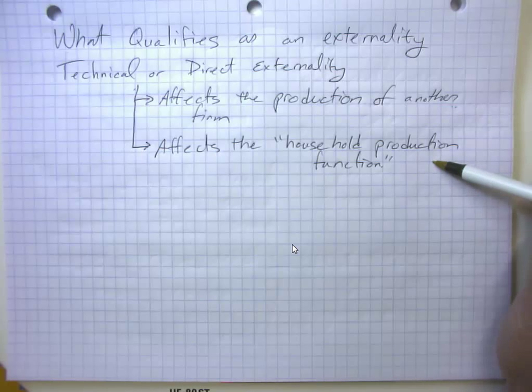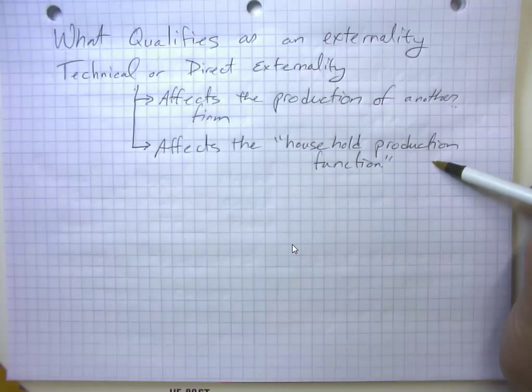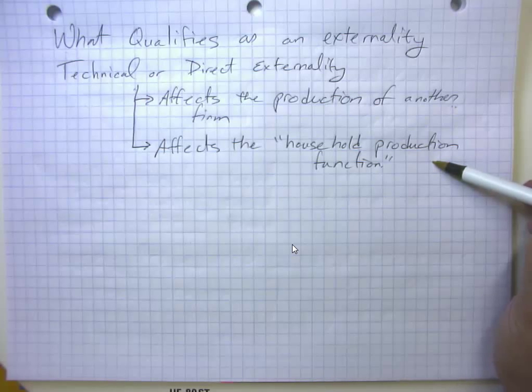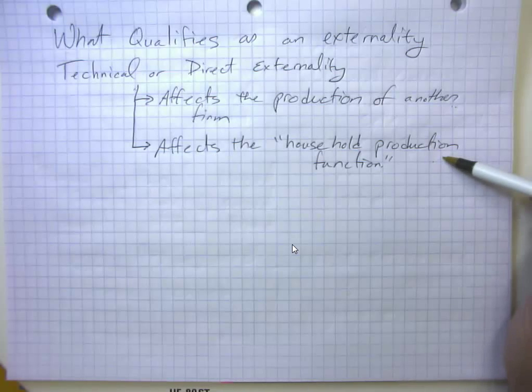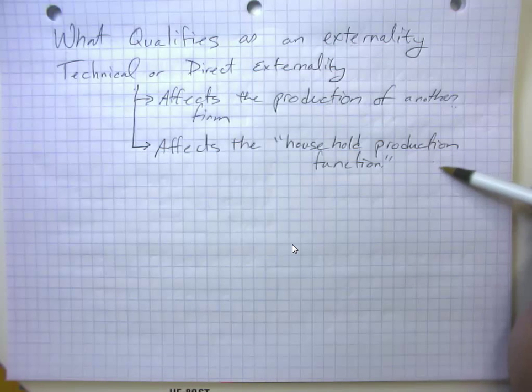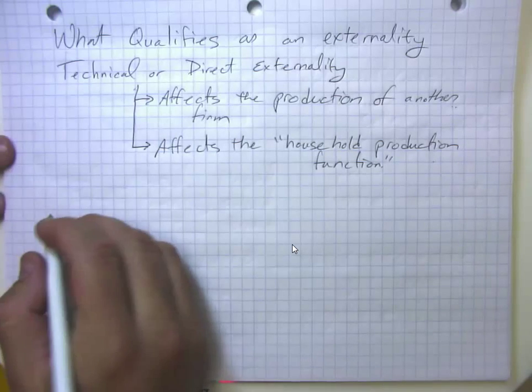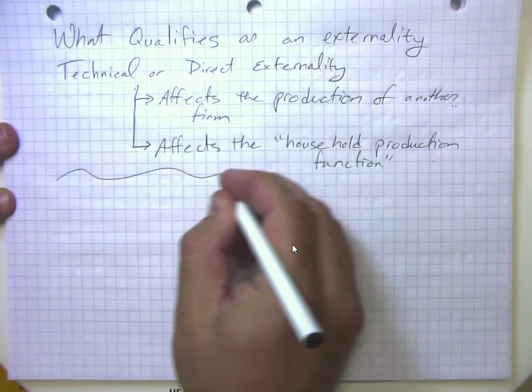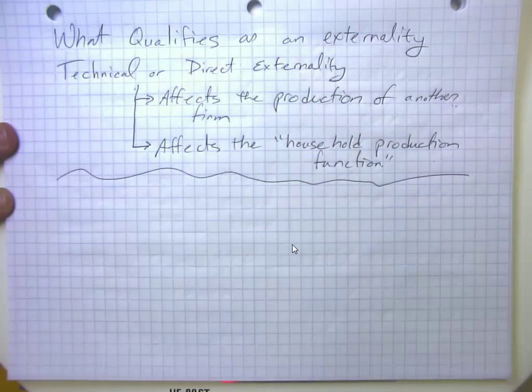Or it might be that the fertilizer or manure gets into the water, and so consequently if you swim in the river you either have to take large precautions or it becomes more dangerous. And you can see how there's a directly measurable effect on household's welfare. So there's a health effect there. So that is one type of externality.